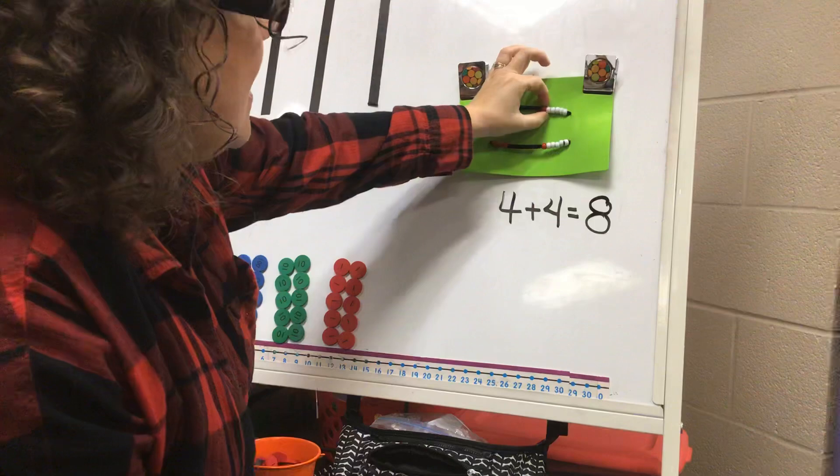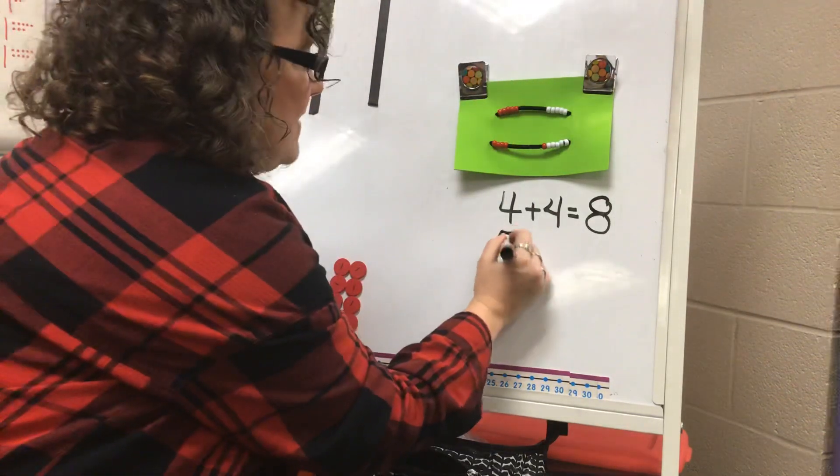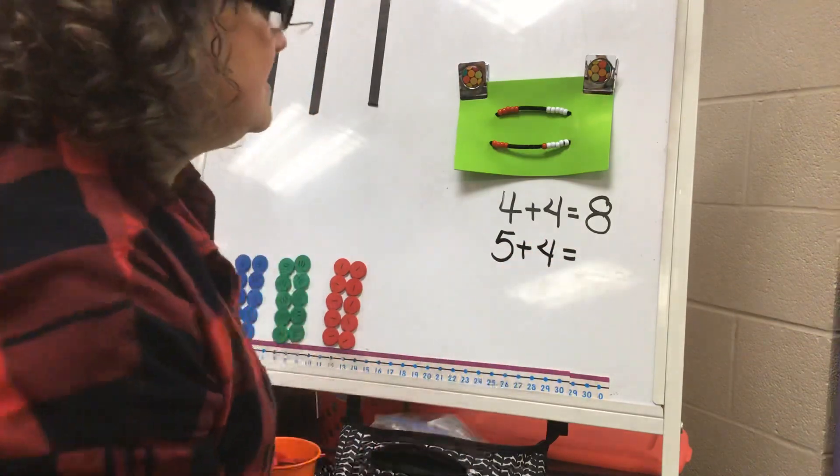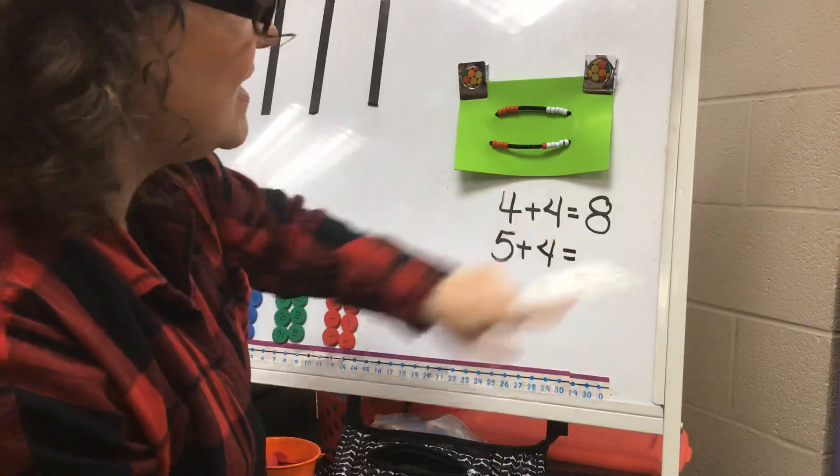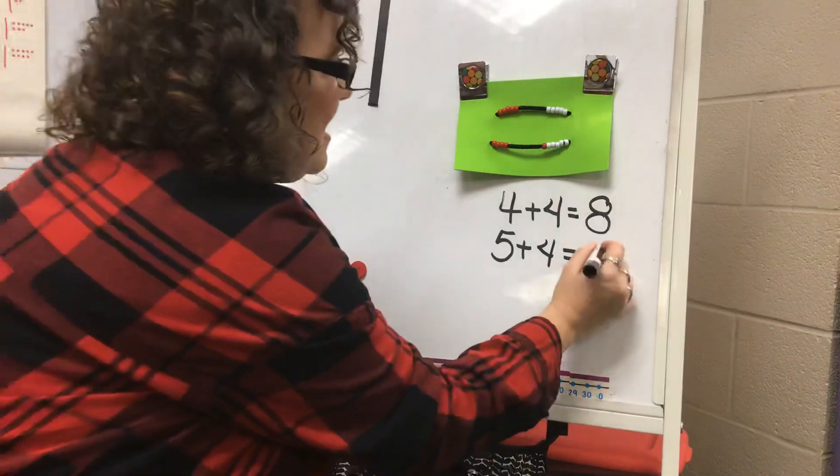So if I know four plus four is eight, then I can add one more and have a near double fact. I changed my fact to five plus four. If I know five plus four is one more than four plus four, what number's one more than eight? Did you say nine?